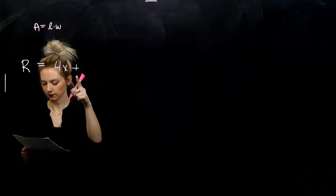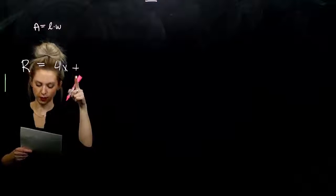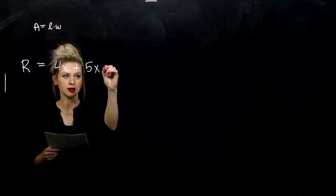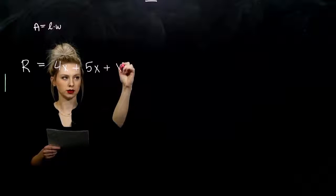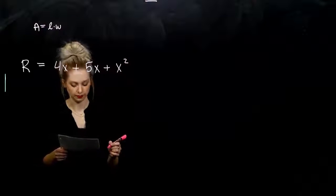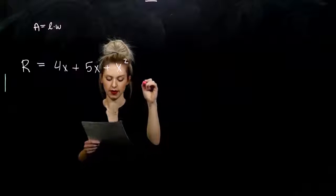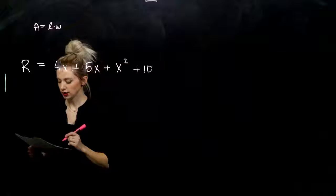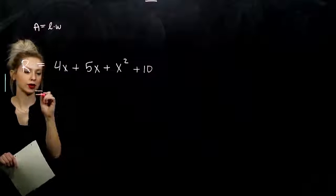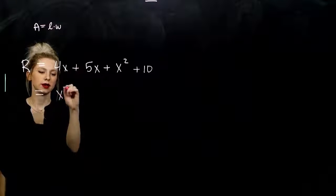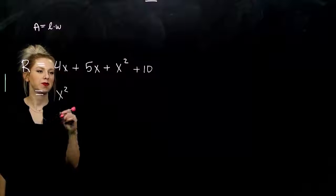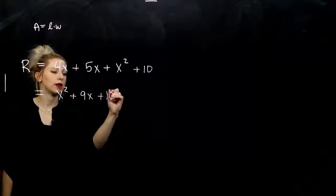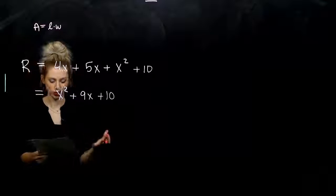Area of rectangle B, length times width. Adding the area of C again, length times width. Got X squared and the area of D, length times width will give me 10. So we like to see it in descending order. What comes first? X squared. How many factors of X do I have? 9 of them. And to the end I'm adding 10. Pretty straightforward.